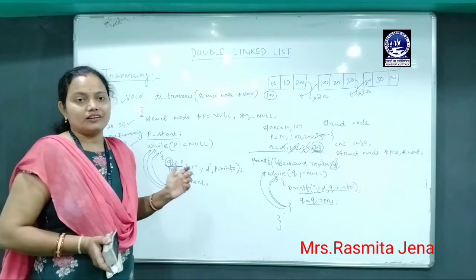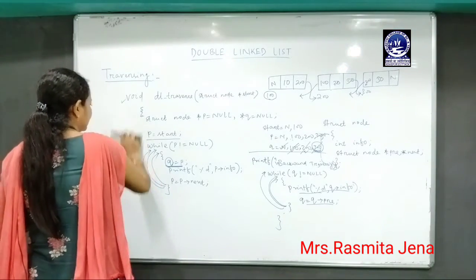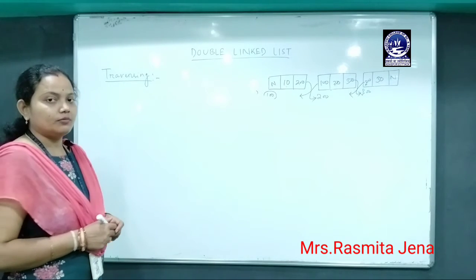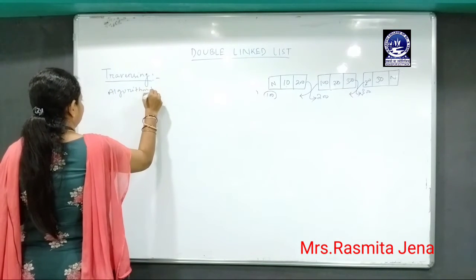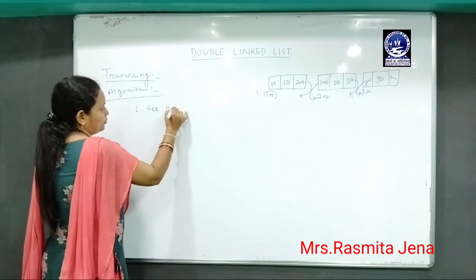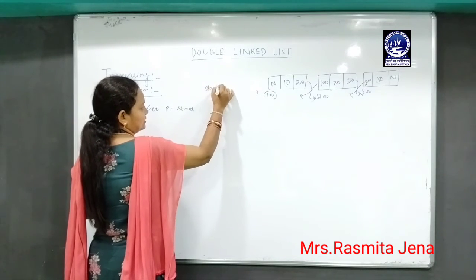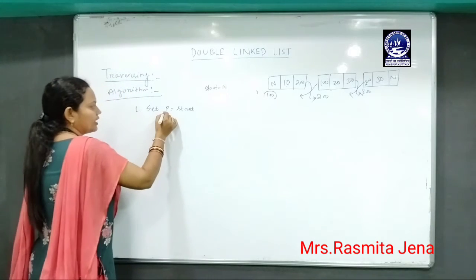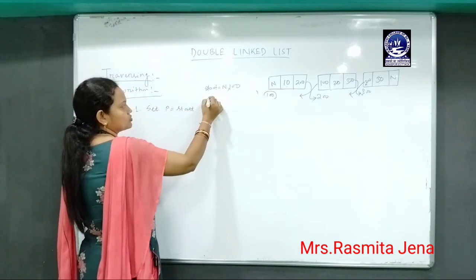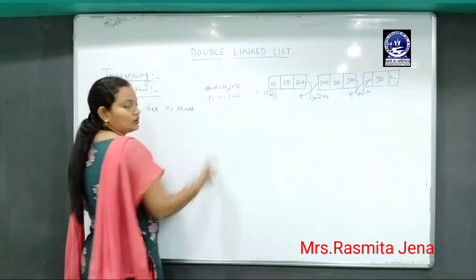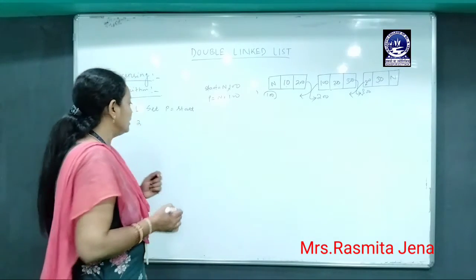Let me now present the algorithm for traversing the double linked list. Step 1: Set p equals start. This is our start pointer, initially null. When the nodes are created, start becomes 100, and when I set p equals start, p becomes 100. Next, we will start traversing the double linked list in the forward direction.